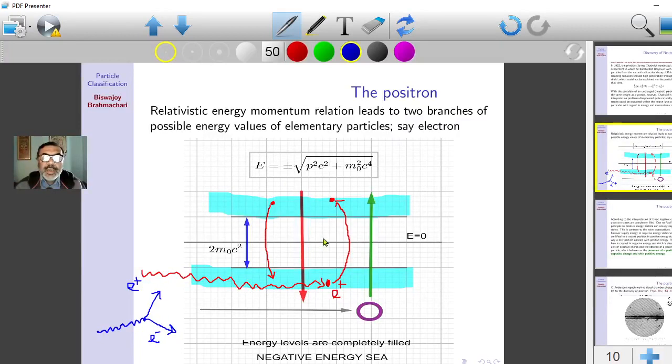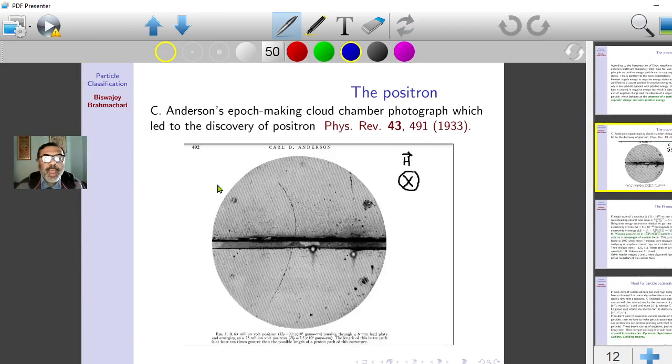This exotic theory of negative energy sea had to be proved experimentally. So such a thing happened in the works of Anderson, who was studying cosmic rays. Cosmic rays are generally high energy protons and also photons.